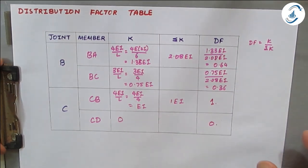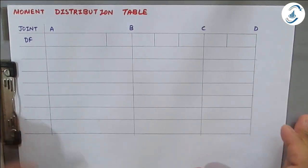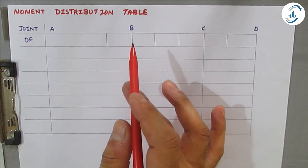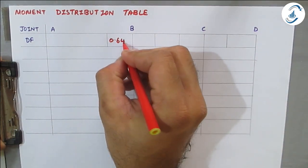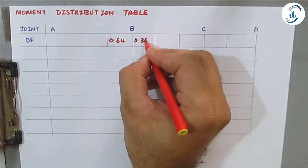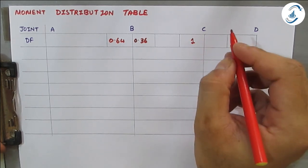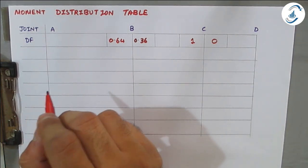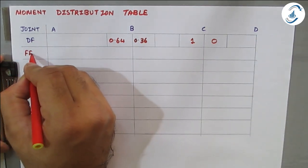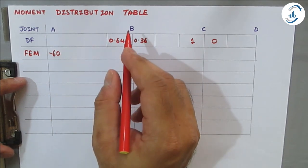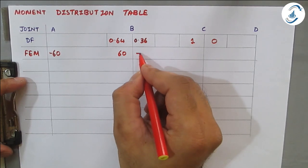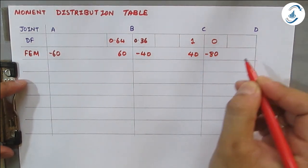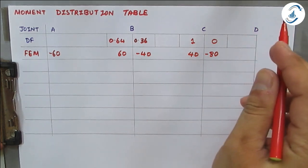Now we set up the moment distribution table. The first row lists joints A, B, C, D. The second row shows distribution factors: BA = 0.64, BC = 0.36, CB = 1, CD = 0. The fixed end moments row: MF_AB = −60, MF_BA = +60, MF_BC = −40, MF_CB = +40, MF_CD = −80, MF_DC = +80.